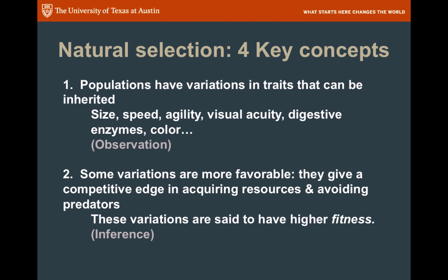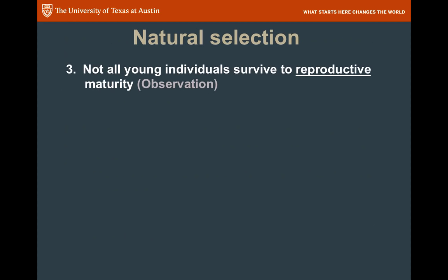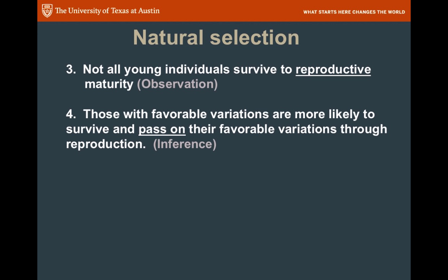From that, Darwin inferred that some of those variations are more favorable than others — they give a competitive edge to survival, to acquiring resources, to avoiding predators, to reproducing. Another key observation is that not all individuals will survive to reproductive maturity. Those variations that make an individual more adapted to their environment mean those individuals will survive in higher numbers, reproduce in higher numbers, and pass on those favorable traits to their offspring.